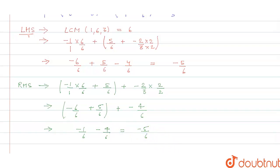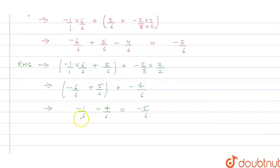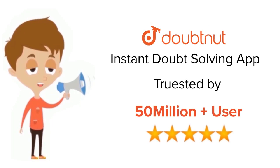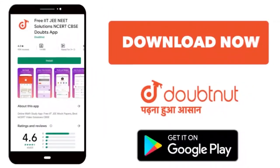So we can say that LHS is equals to RHS and that means the associative property of addition of rational numbers is verified. Thank you. For class 6th to 12th, IIT-JEE and NEET level, trusted by more than 5 crore students. Download Doubtnet app today.